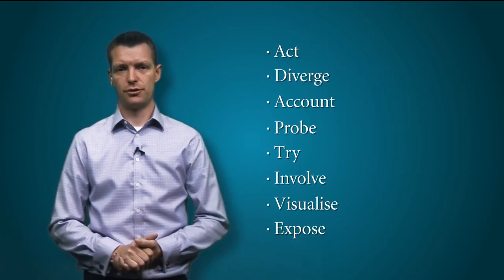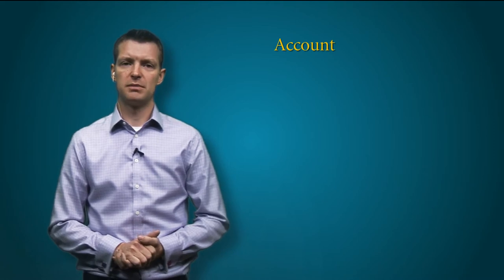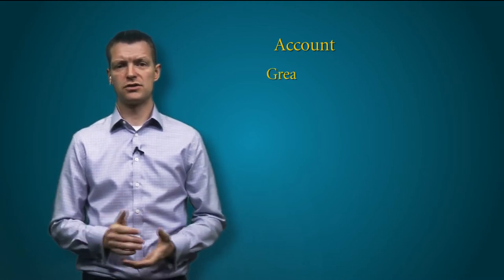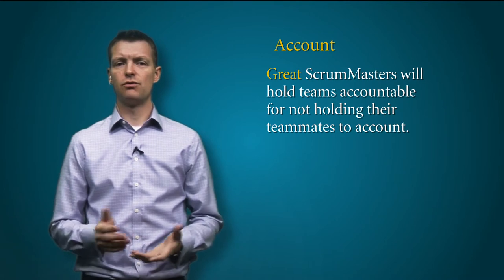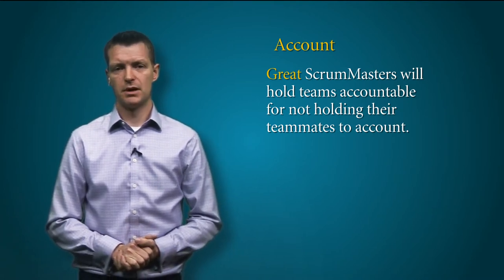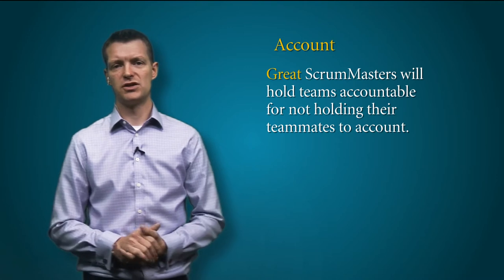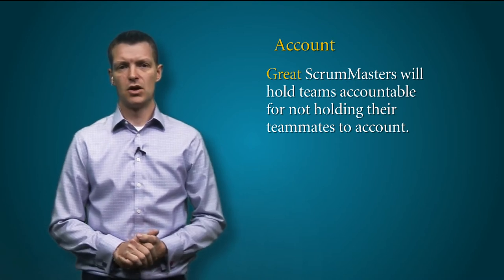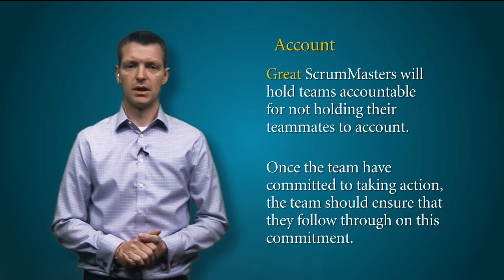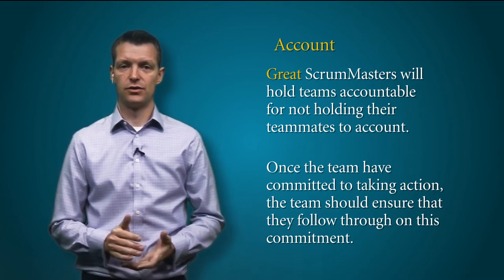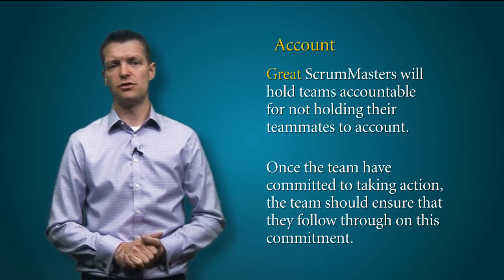Account for follow-through. A good scrum master will hold team members accountable when necessary, while a great scrum master will hold the team accountable for not holding their teammates to account. This holds true in the retrospective as much as anywhere. It can be incredibly frustrating and demotivating if the same ideas, complaints, or observations come up time and again. Once the team have committed to taking action, the team should ensure that they follow through on this commitment — either by transferring the actions onto the upcoming sprint's backlog, or by reviewing their previous actions during the next retrospective.